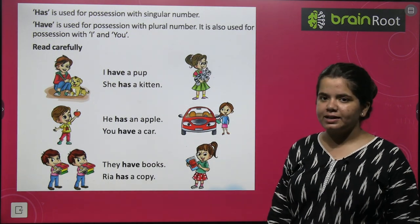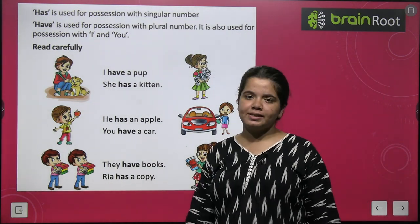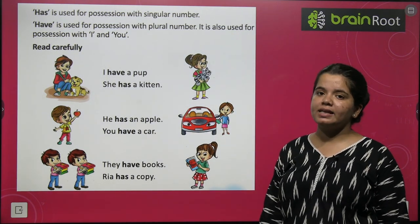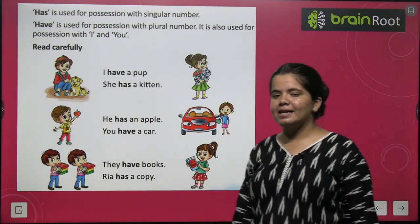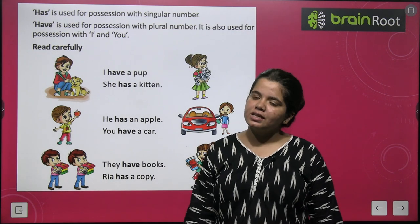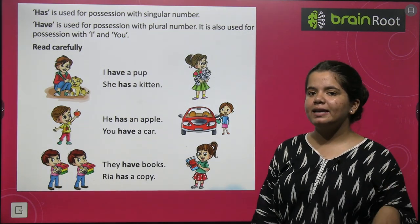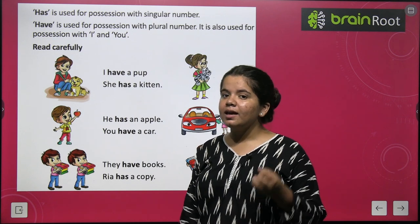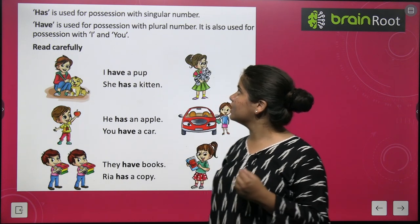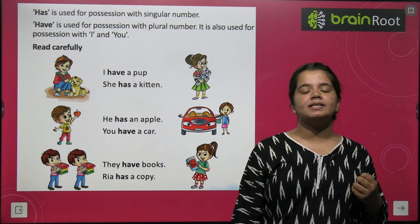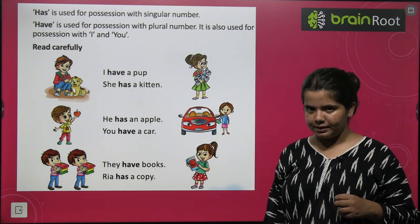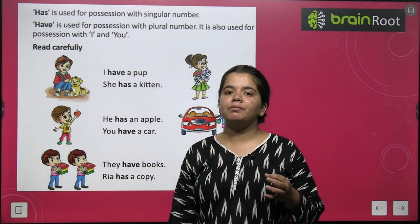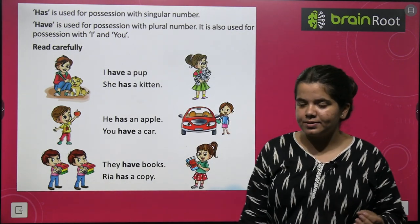You have to be aware of which cases we use has and have. Has is used for singular things — when we talk about one thing, we will use has. Have is used when we talk about plural things — when we talk about plural things, we will use have.